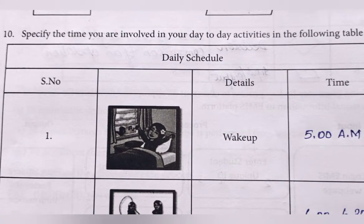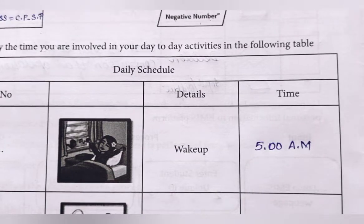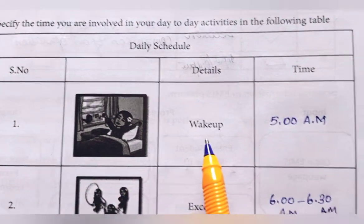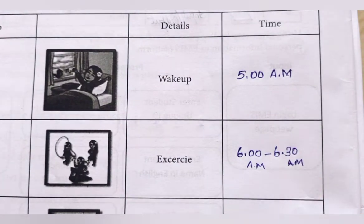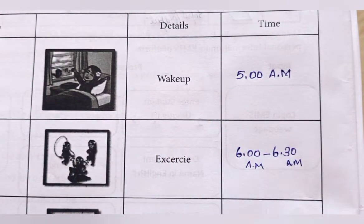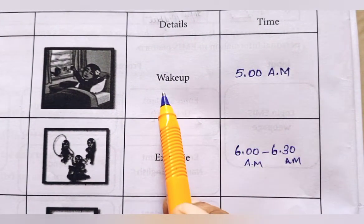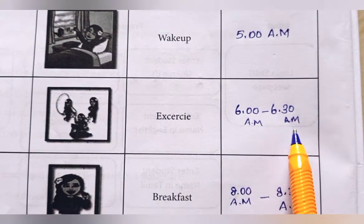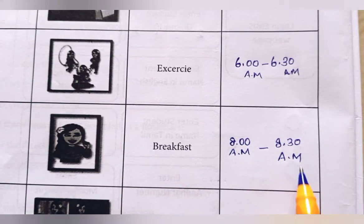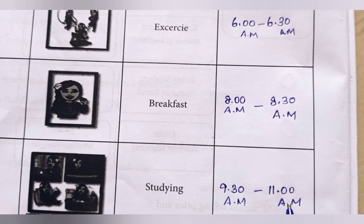Tenth question: specify the time you are involved in your day-to-day activities. This is the following table. First wake-up time is 5 a.m. Exercise is 6 to 6.30 a.m. Then, breakfast is 8 to 8.30. Studying is 9.30 to 11.